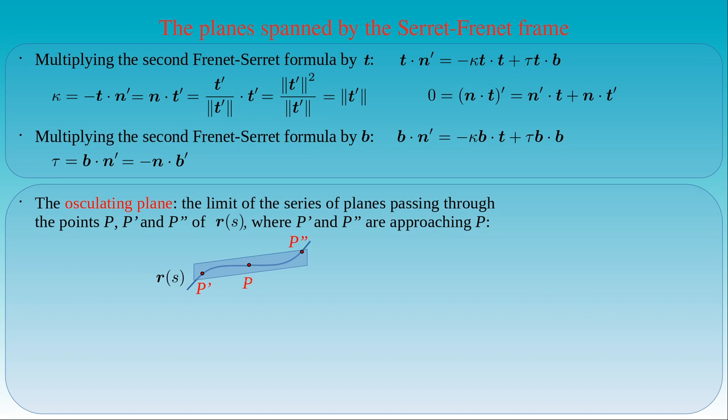Then we can move the points P' and P'' along the curve so that they are closer to P, and the new points determine another plane. We can choose P' and P'' even closer to P, defining yet another plane. Continuing this process with a series of point pairs approaching P on the curve, we obtain a series of planes. In the limiting case, as P' and P'' become infinitely close to P, the limit of this series of planes is defined as the osculating plane.